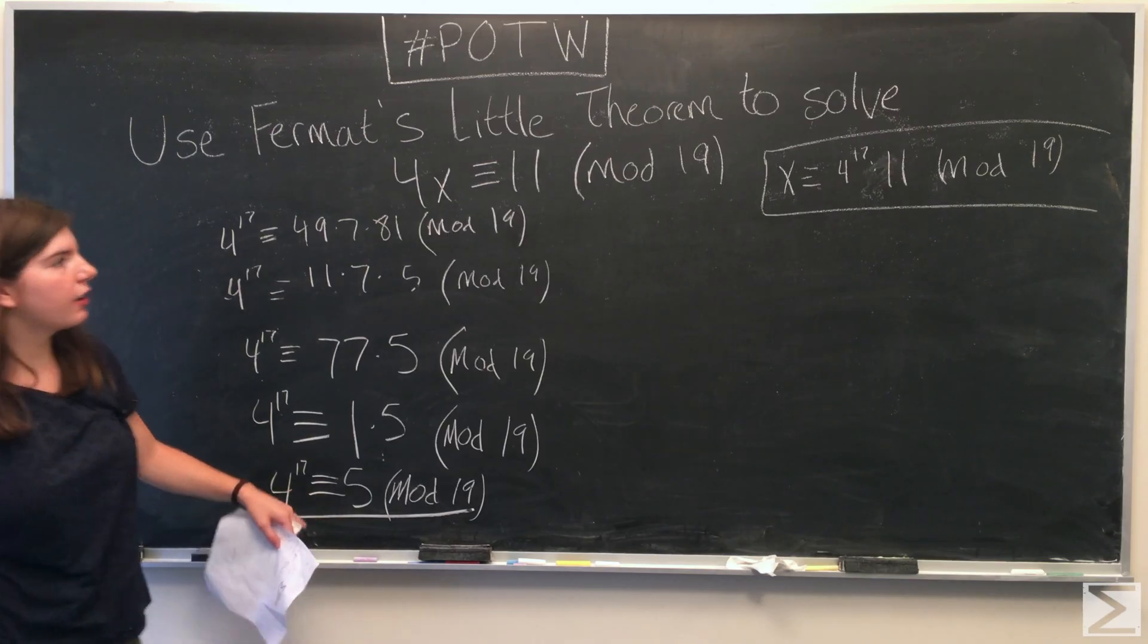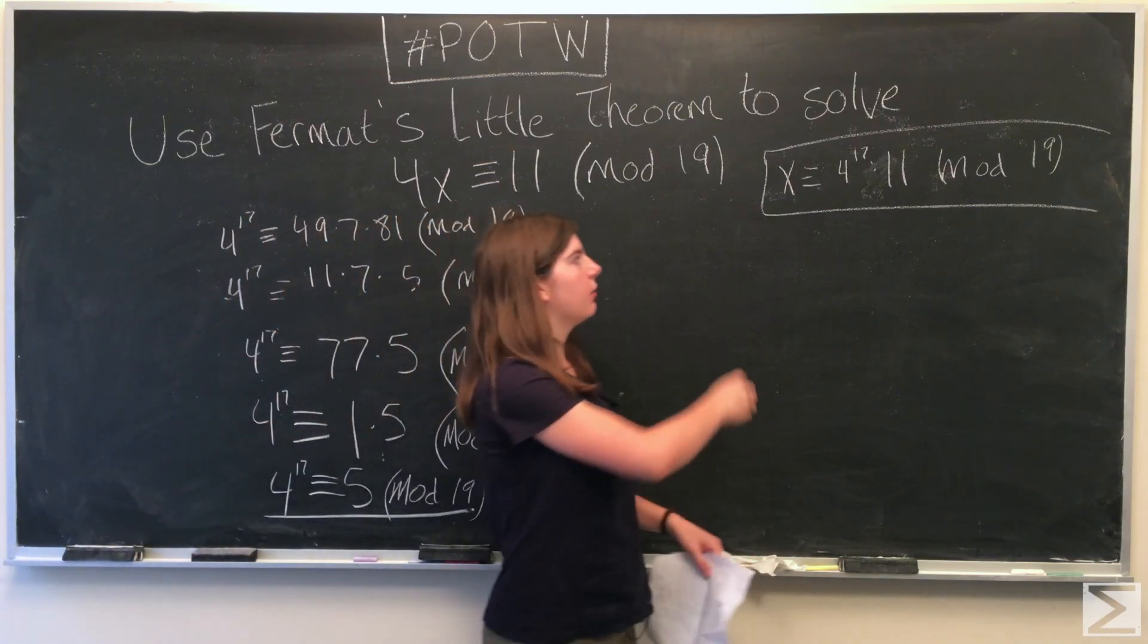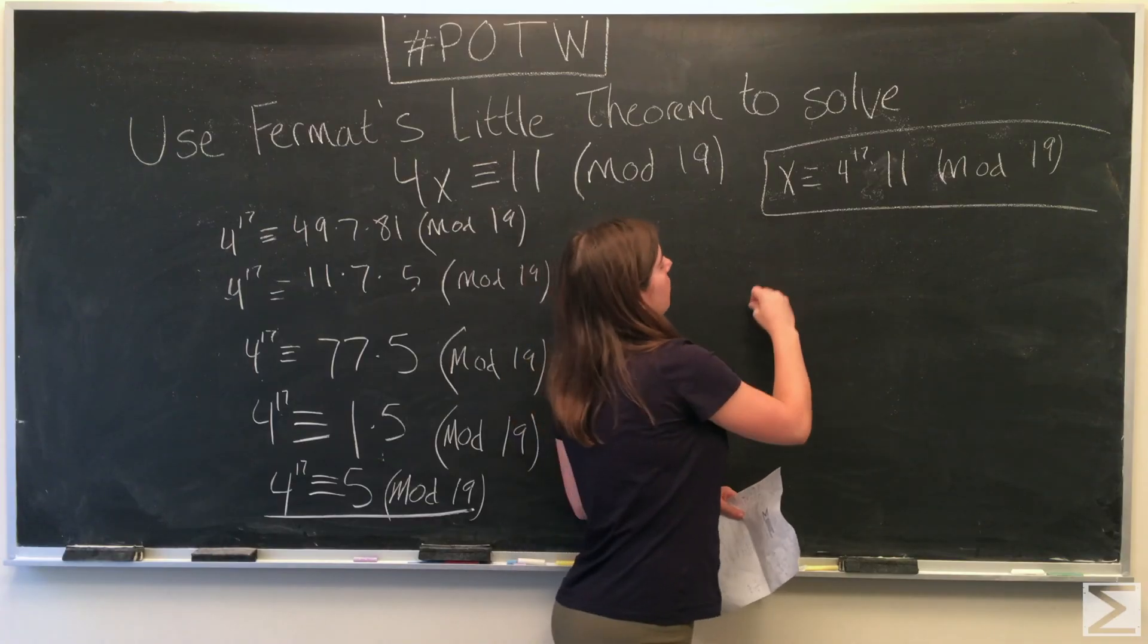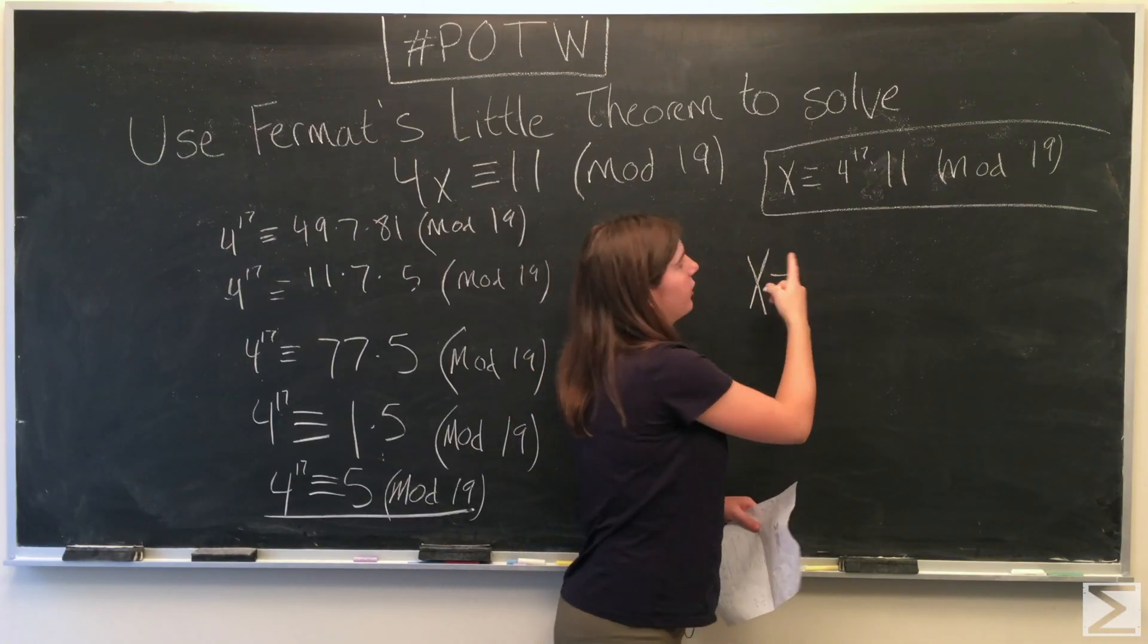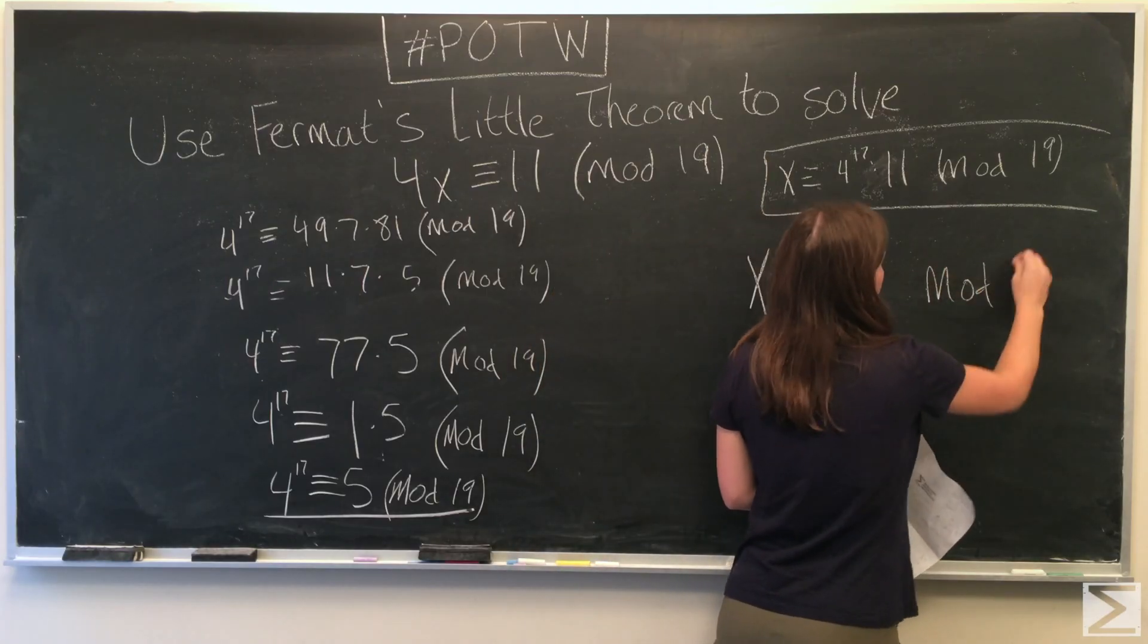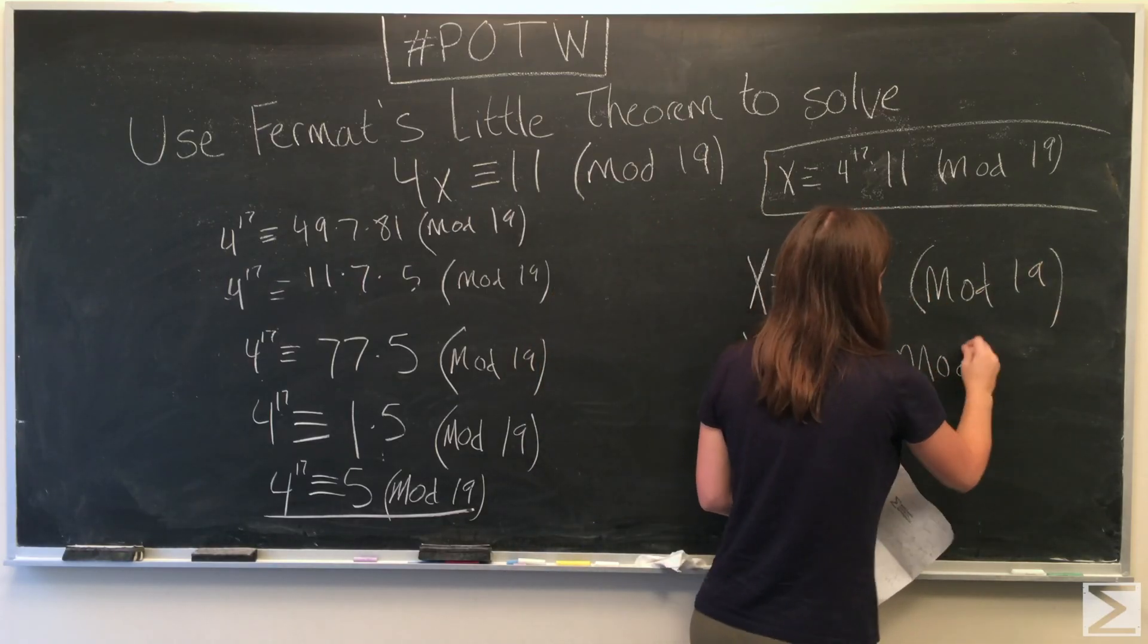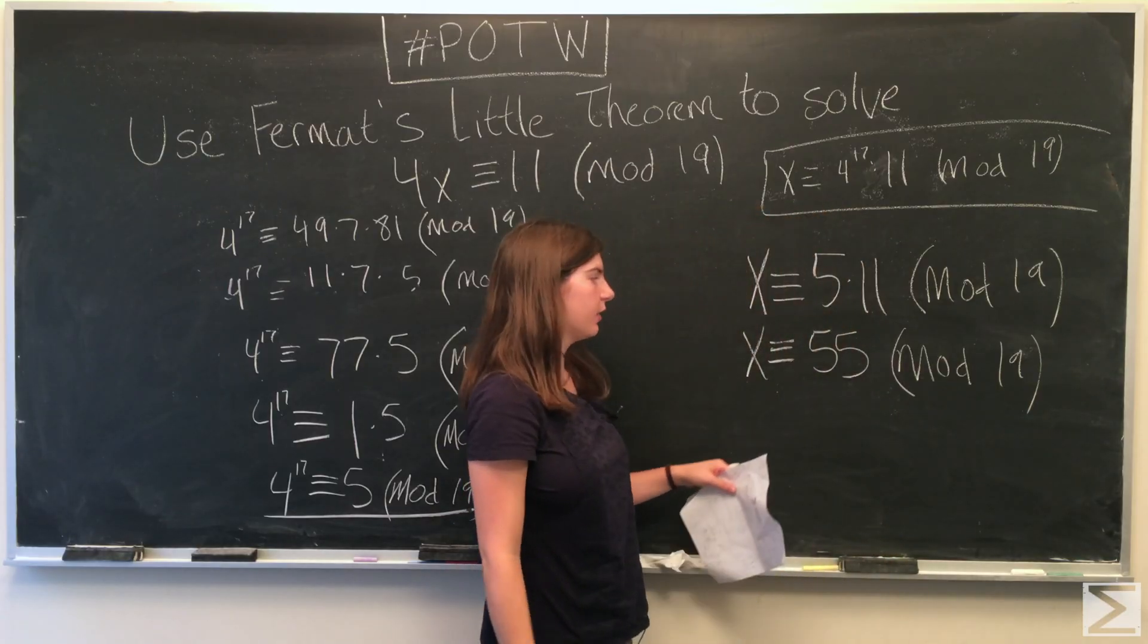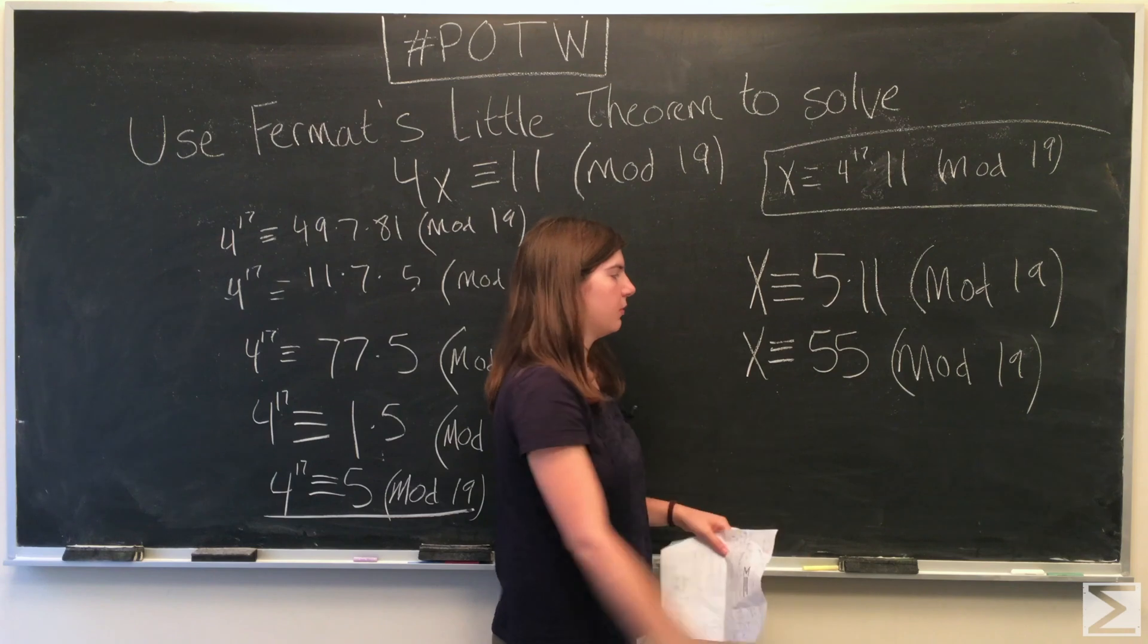So we can go back to what we found in the beginning, which is x is congruent to 4 to the 17th times 11. And we'll replace 4 to the 17th with 5.